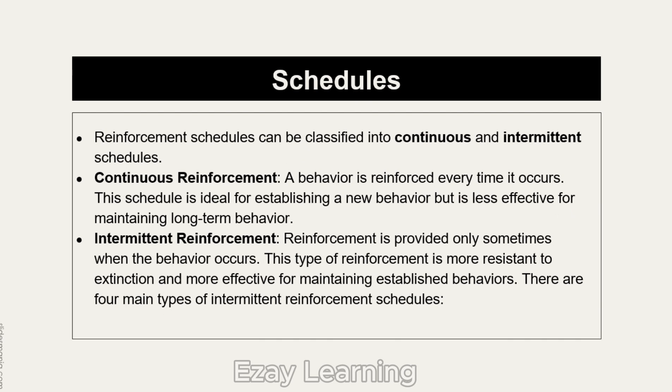The schedules of reinforcement are continuous and intermittent. Continuous reinforcement means you are reinforcing a behavior every time it occurs — for example, giving a child praise or a reward for every correct response. This schedule is ideal for establishing a new behavior but is less effective for maintaining long-term behavior.